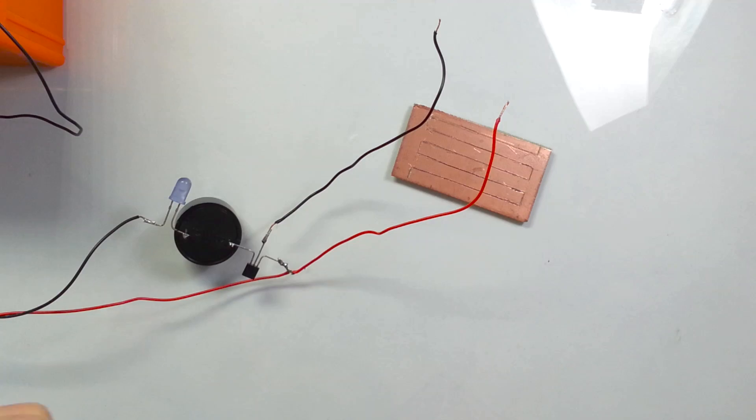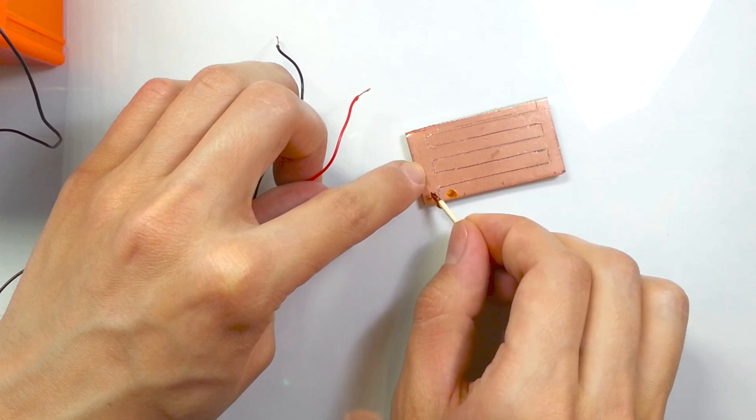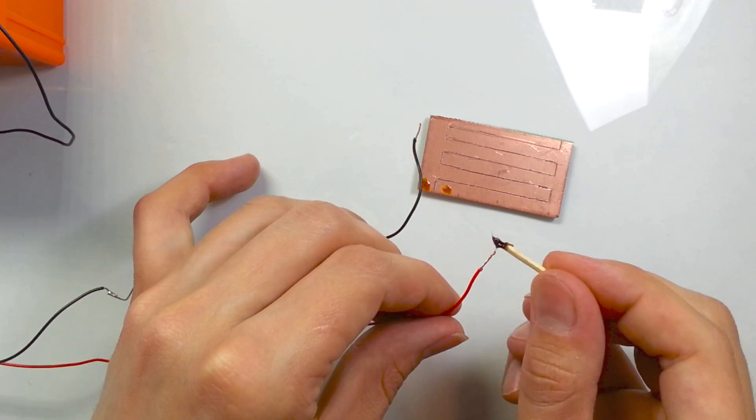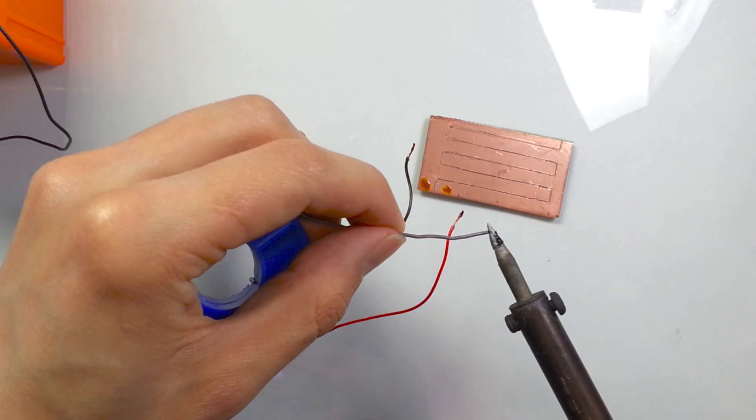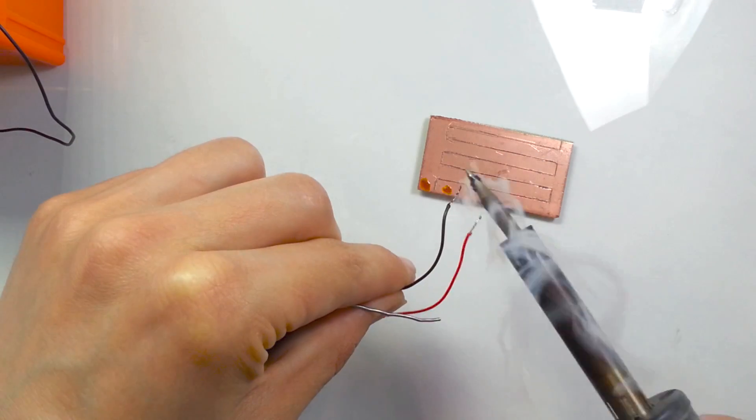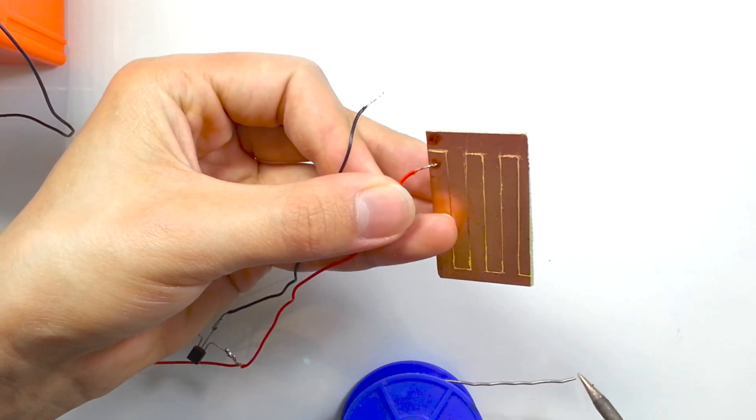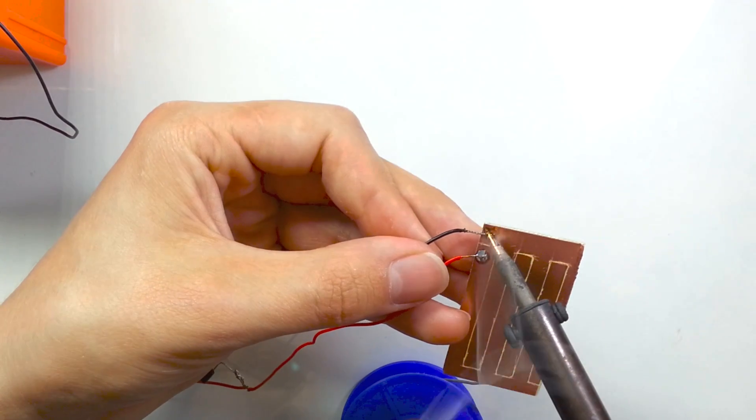Though water is not a very good conductor, its conductance is sufficient to switch bipolar transistor on. And when the transistor is on, it will turn the buzzer and the LED on also. Now let's solder the wires to the sensor, and we are ready to test this device.